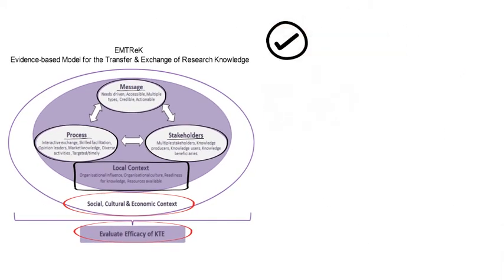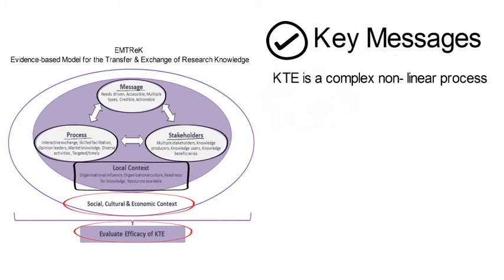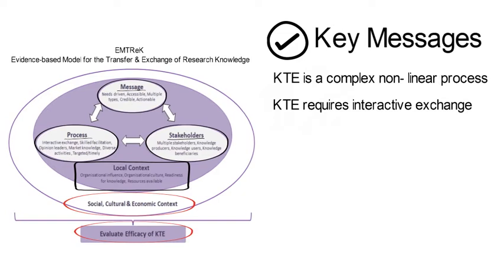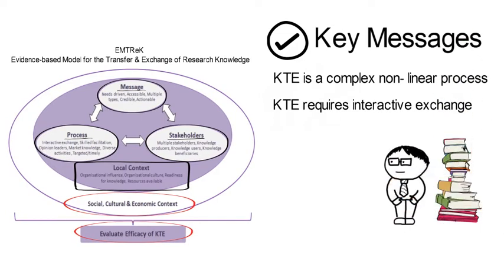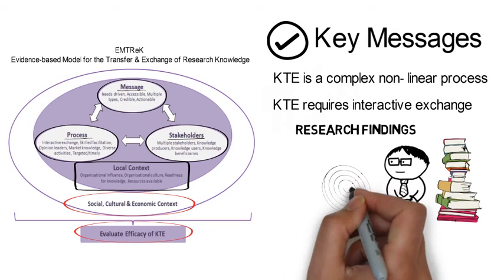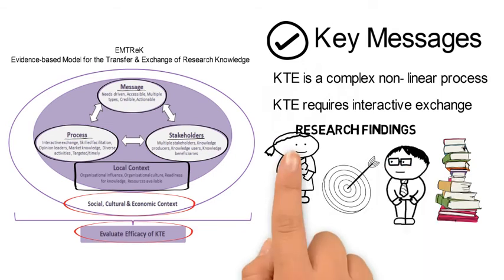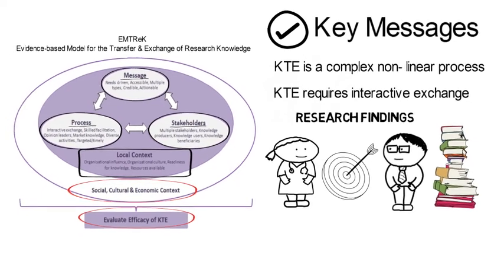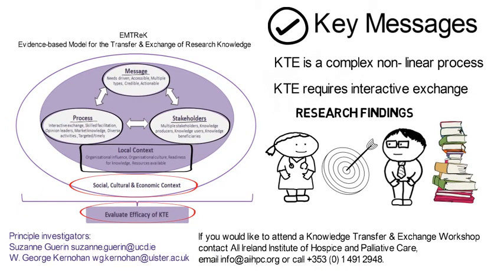So the key messages from our work: knowledge transfer is a complex, non-linear process involving multiple stakeholders, but also multiple messages at different stages of the life course of the project. It is about interactive exchange — to and from practice and policy, but also to and from other researchers. And finally, we're not saying that this model will guarantee that research actually arrives in practice or gets used, but we would argue that this is about knowledge landing — making sure that your research gets to the setting where it can have an impact. So while it might not automatically result in change, it's going to make it more likely that change will occur.